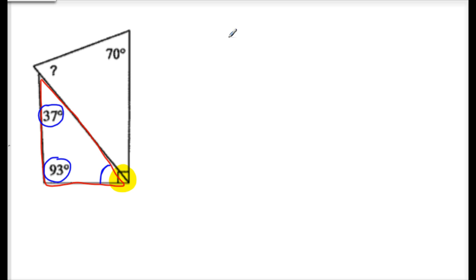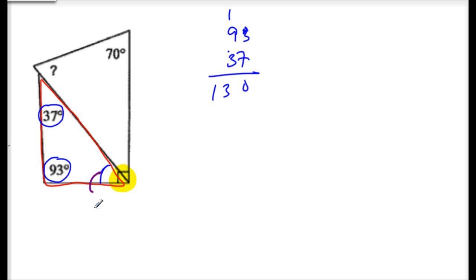So I add 37 and 93 to get 130 degrees. Therefore this angle here is 50 degrees. How do I find the next angle? You subtract 50 from 90. I know both these angles together are 90 degrees, so if this one's 50, then this one has to be 40. Now I'm in my second triangle.